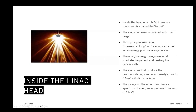Inside the LINAC head, there's a metal disc called the target. The electron beam collides with the target and creates X-ray photons. This process is called Bremsstrahlung, which is German for 'braking radiation.' Basically, as the target slows down the electrons, to account for that lost energy, it creates a photon or X-ray. As you can see in the picture, the photons are spread out all over the place.